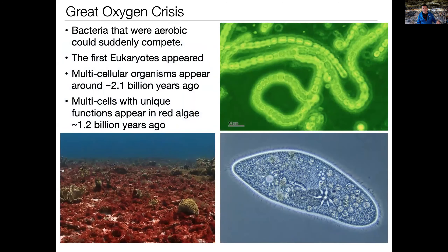Oxygen was an anathema to lots of the bacteria at that time. The Great Oxygen Crisis was when the oxygen finally became dense enough that it started threatening the existence of much of the bacteria. Bacteria that were aerobic suddenly found themselves able to compete. Up to that point, oxygen had been a rare commodity, so there was only a little aerobic bacteria. But suddenly when the oxygen crisis happened, there was plenty of oxygen, and as the anaerobic bacteria died off, the aerobic bacteria could fill in the gaps.